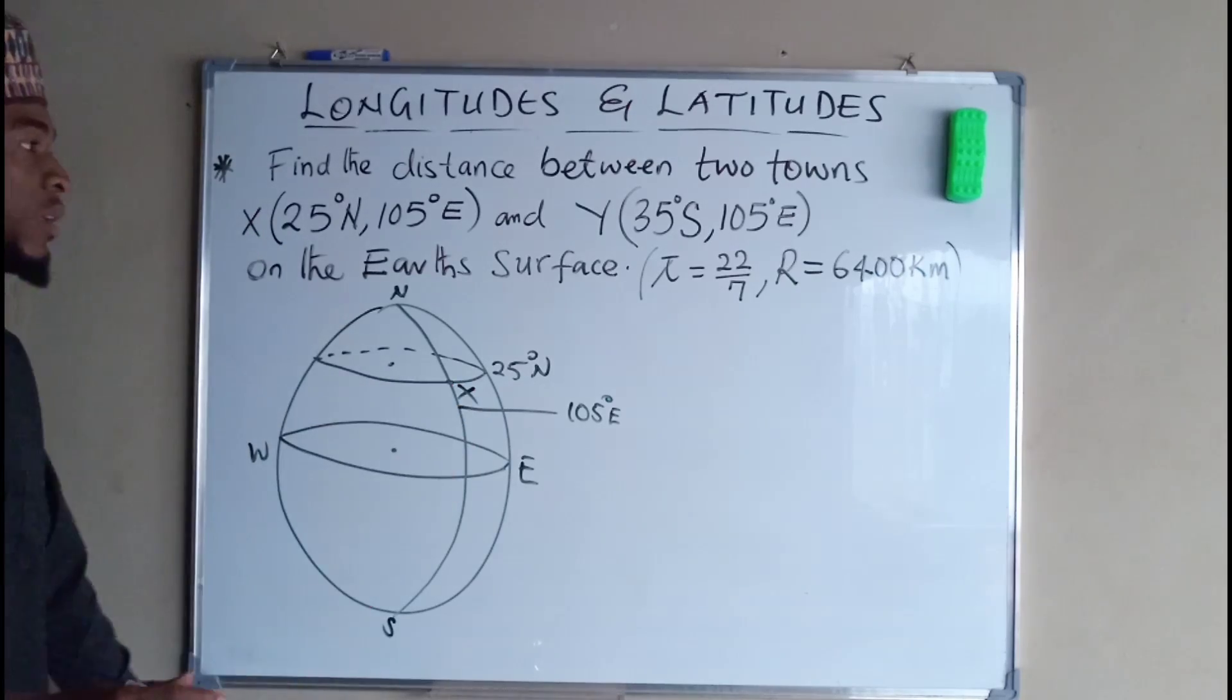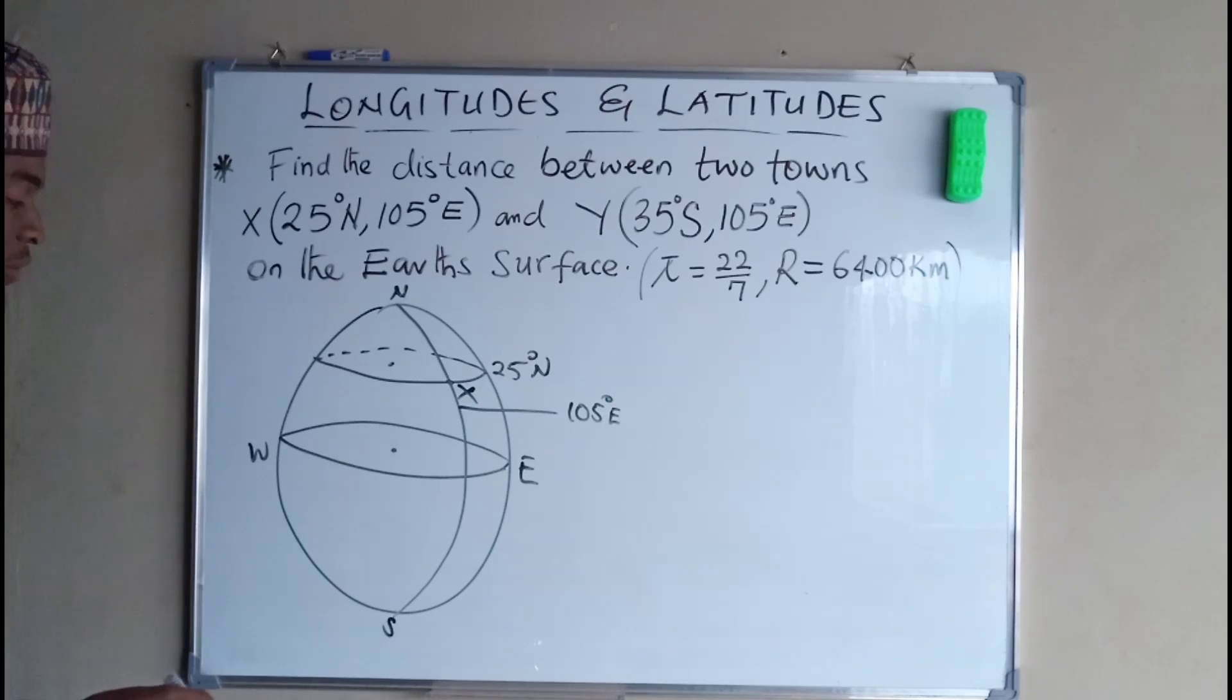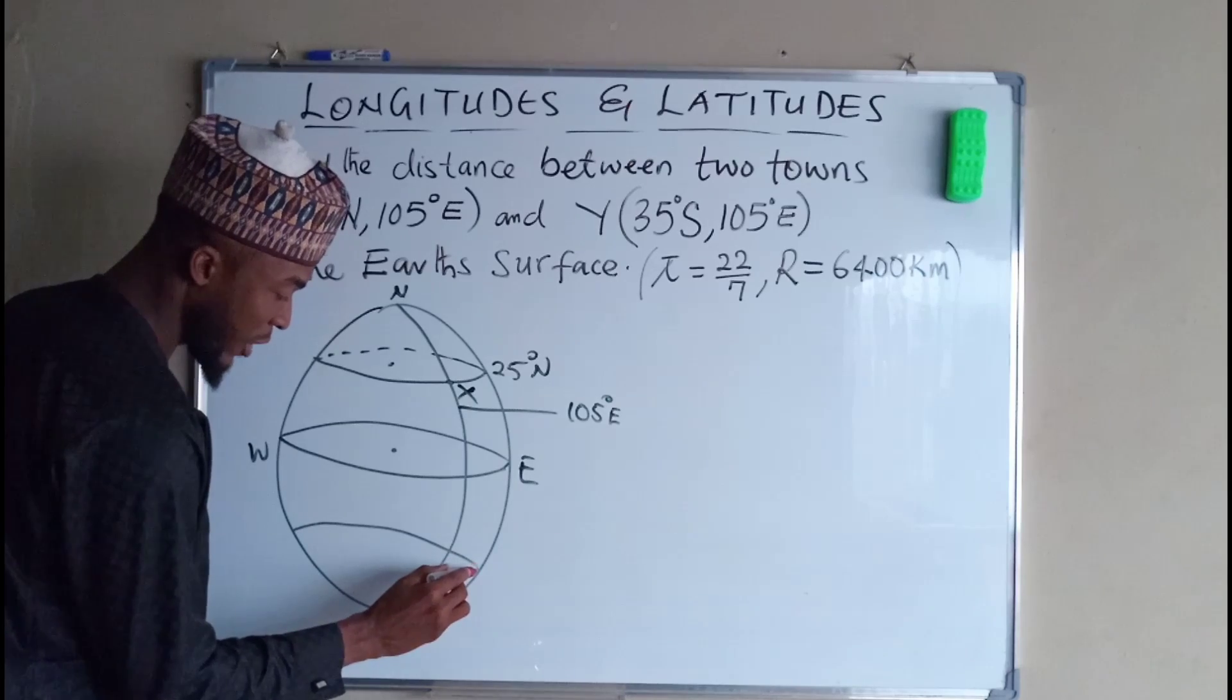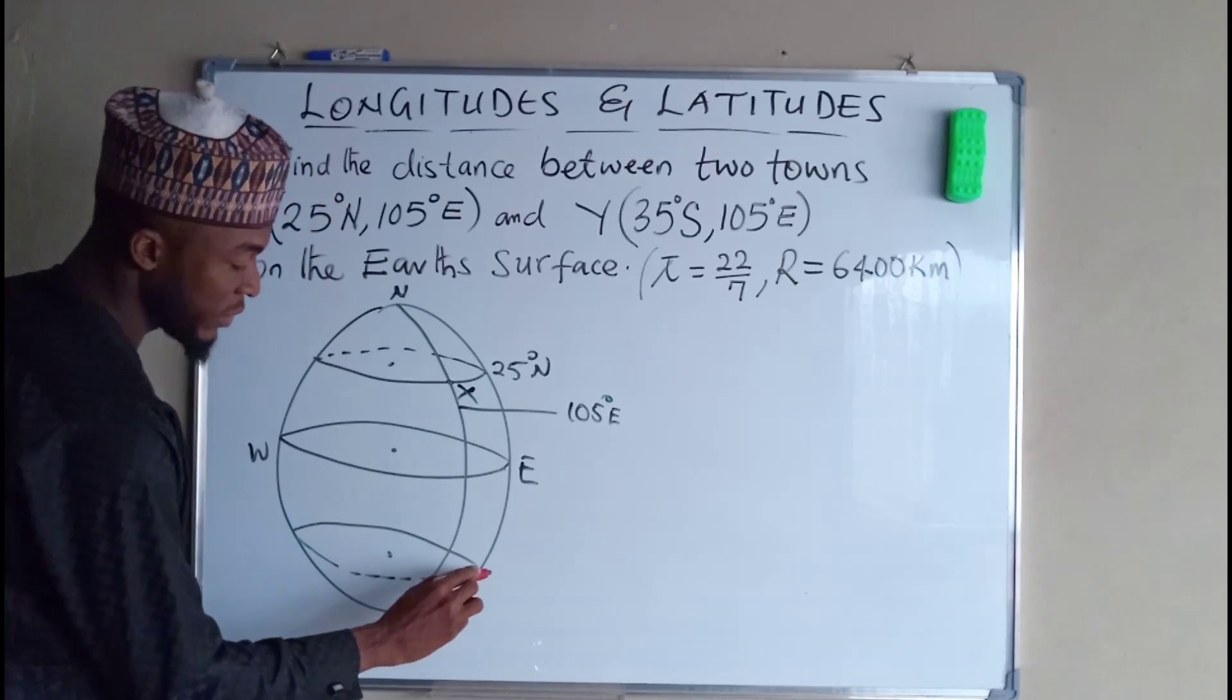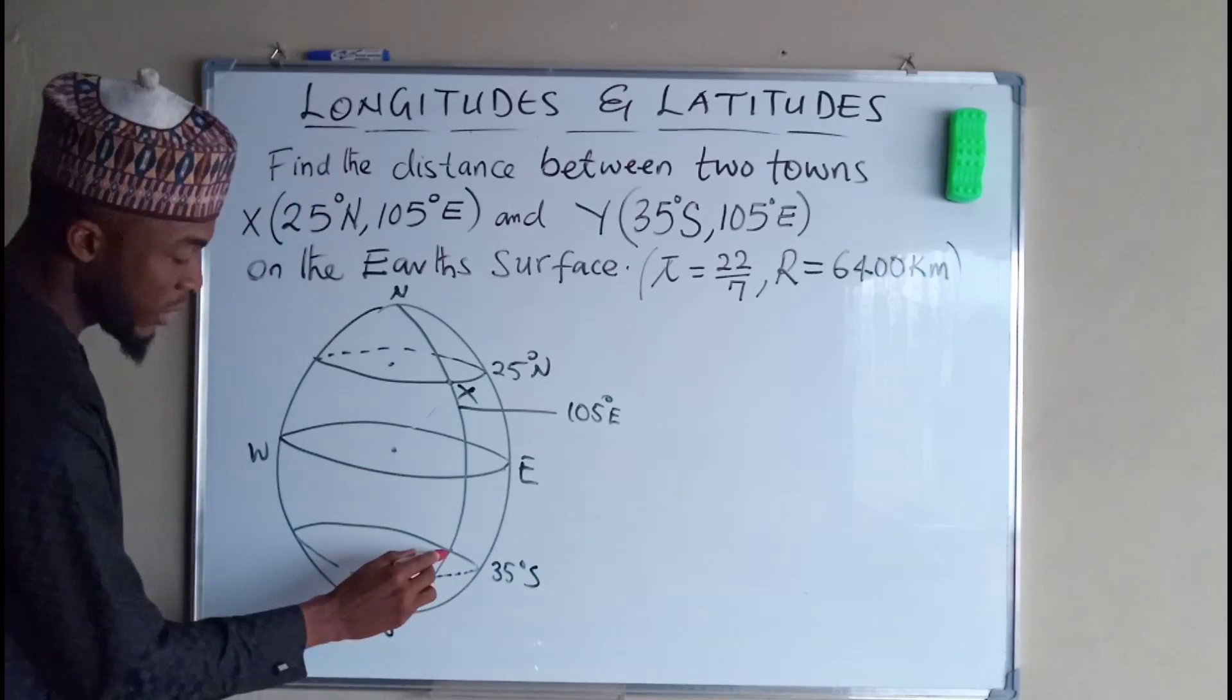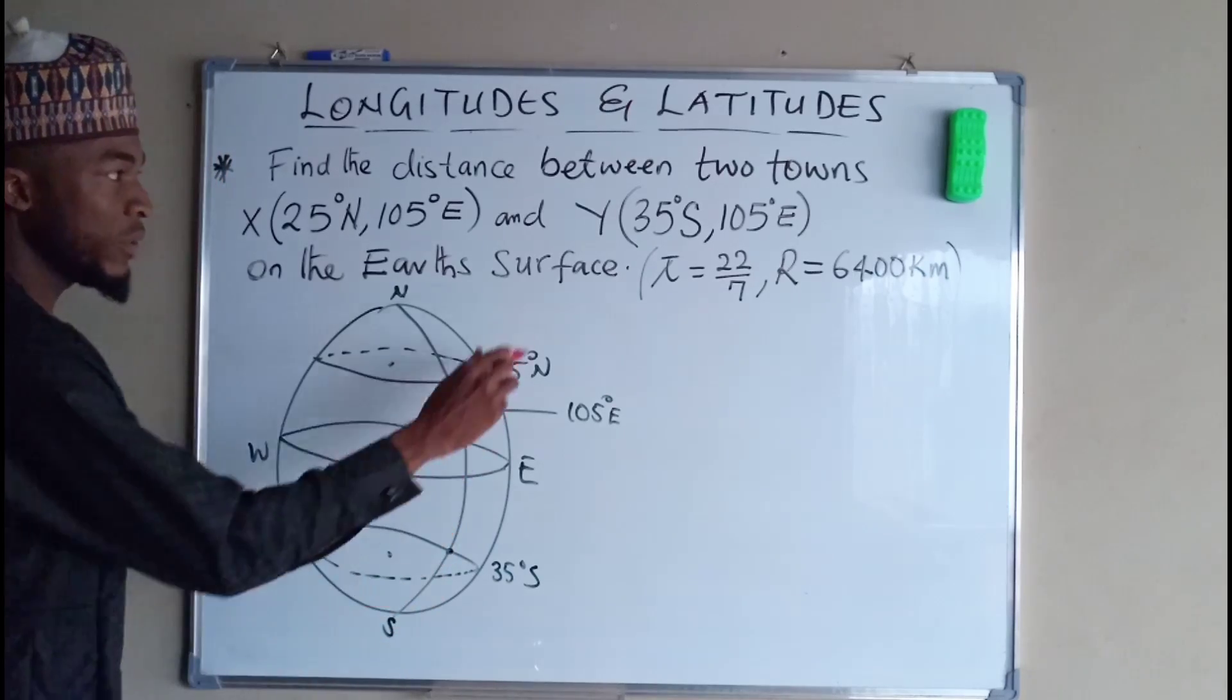Then for town Y is on the latitude 35 degrees south, so towards south direction we have something like this by estimation. This latitude is 35 degrees south. Now the intersection between the longitude and latitude determines the location Y.